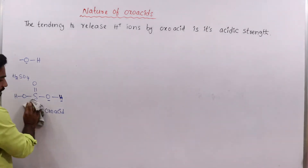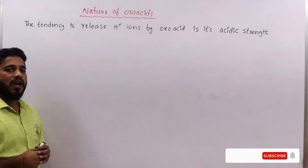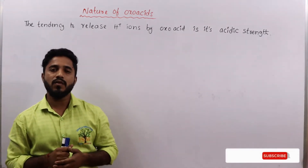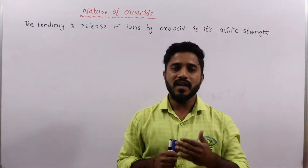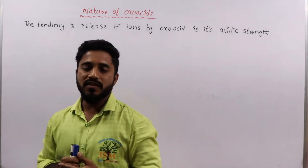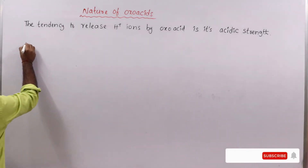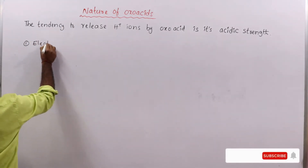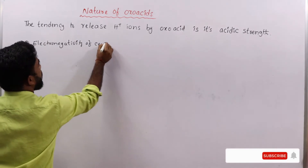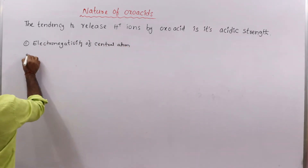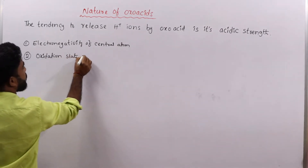Now let us see the acidic strength of oxo acids. The tendency to release H+ ions by an oxo acid is known as its acidic strength. This acidic strength depends upon two factors: one is the electronegativity of the central atom, and the second factor is the oxidation state of the central atom.